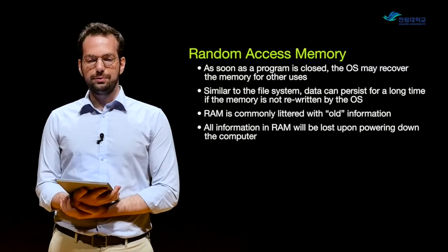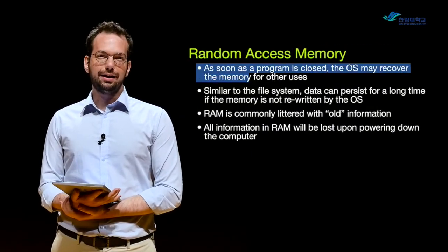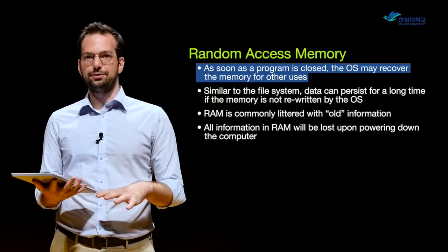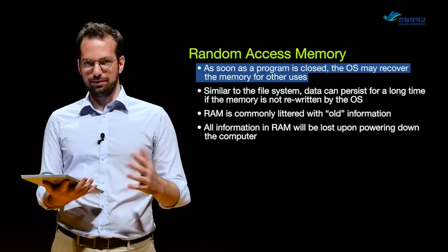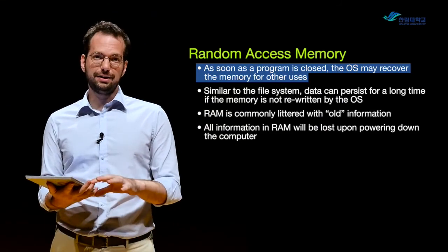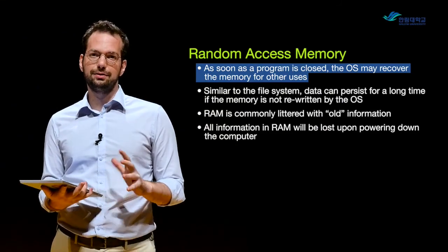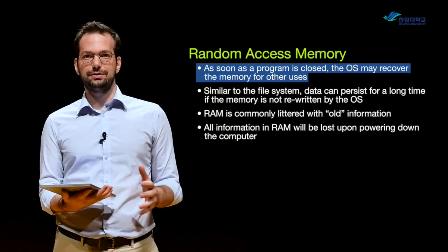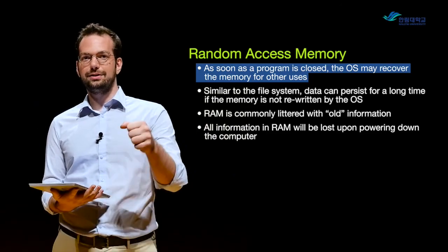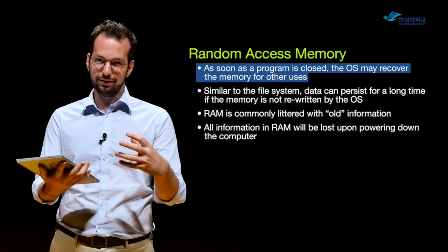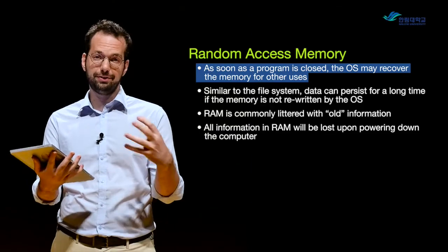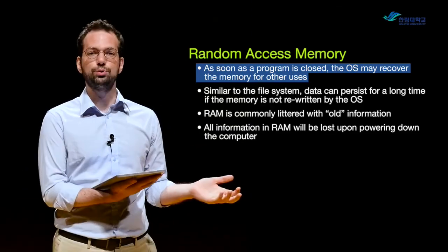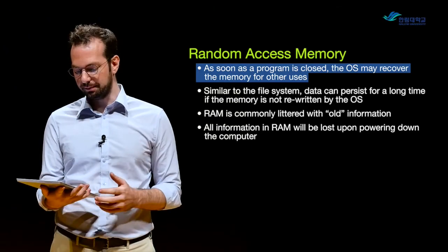Random access memory works a lot like the hard drive where we write a file to the hard drive — it's a little bit slow, but we can still save data. Whenever we shut the computer down, data on the hard drive is still saved. But with RAM, we write data to RAM just to be able to work with it because it's very fast. Whenever we shut the computer down, everything that's in RAM is removed or deleted basically.